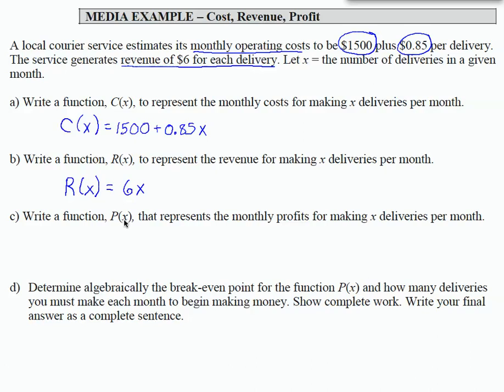And that's what's going on in Part C. Write a function P of X that represents the monthly profit for making X deliveries per month. So all of these quantities line up. P of X, that's our profit function.